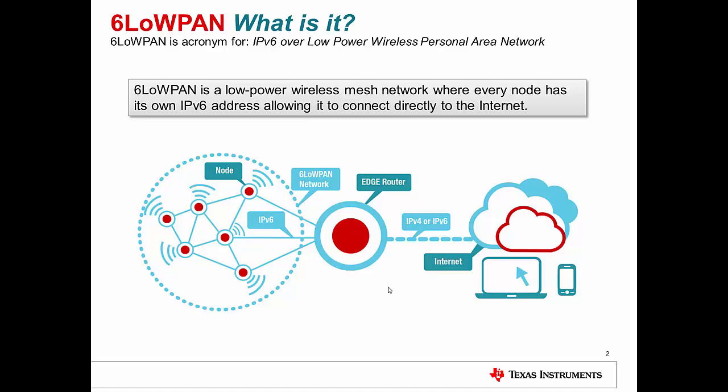That is essentially the biggest advantage which 6LoWPAN offers from a standards perspective: every individual LPRF — low-power RF — wireless node in a mesh network is addressable, controllable, and identifiable.